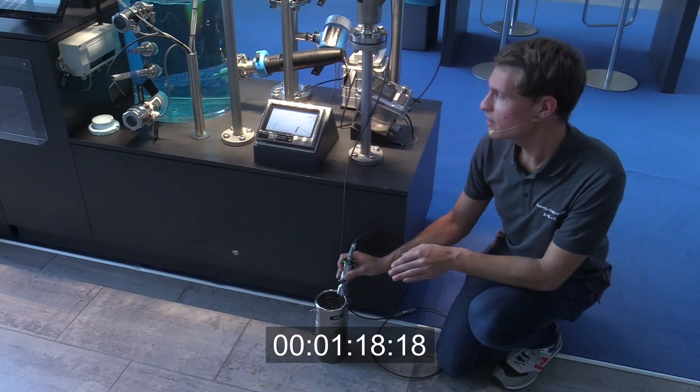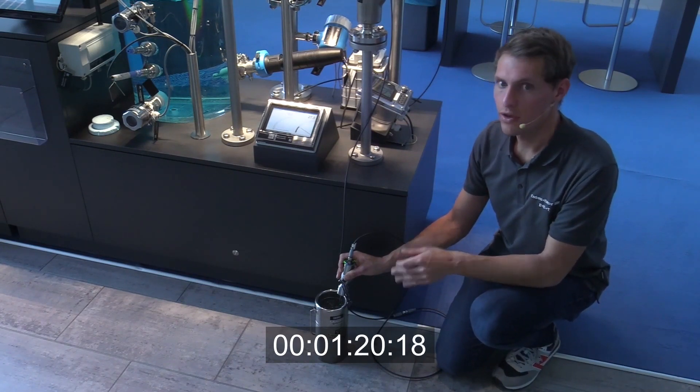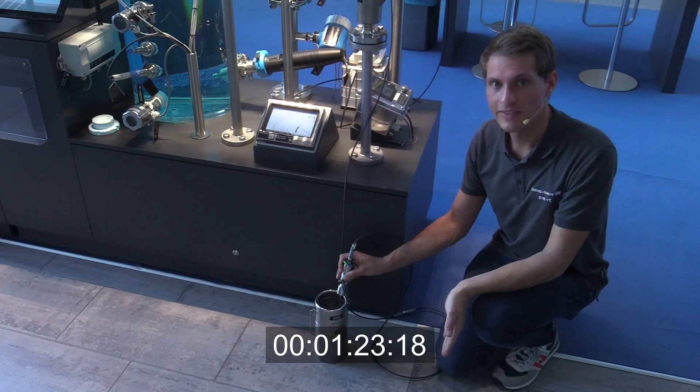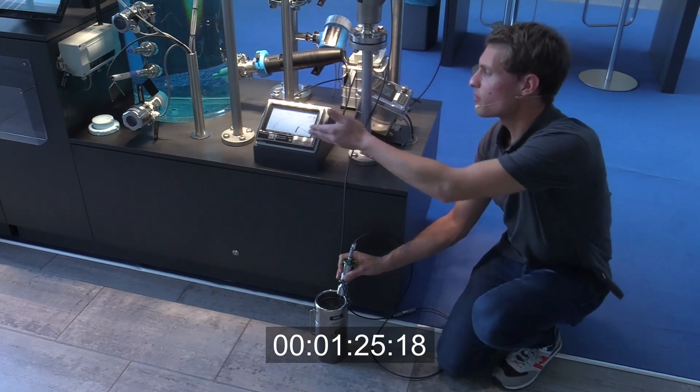So now it's stabilized and we can compare our reference, the ice water sludge with 0 degrees Celsius, to the value from our PLC, in this case the Memograph.